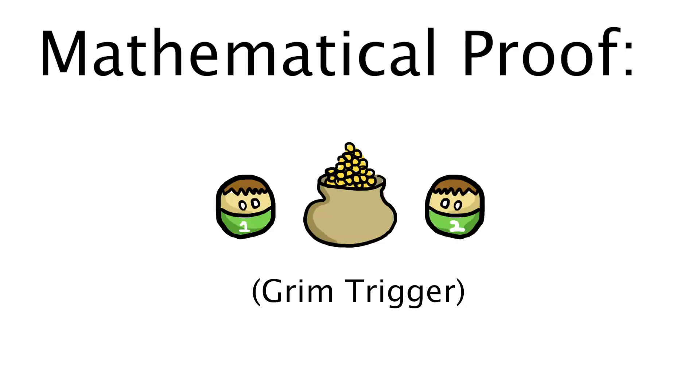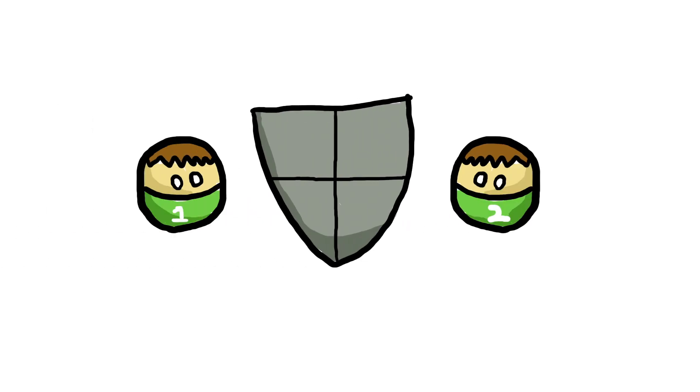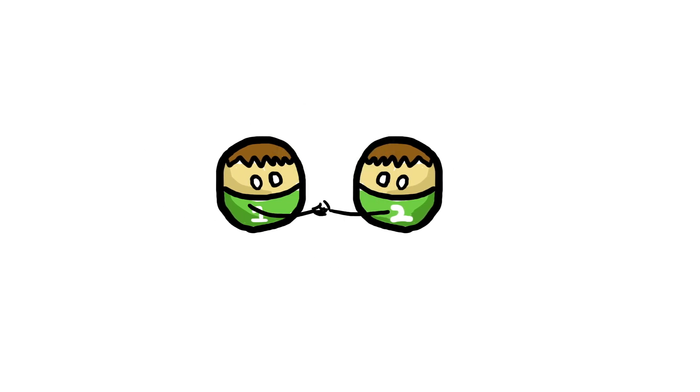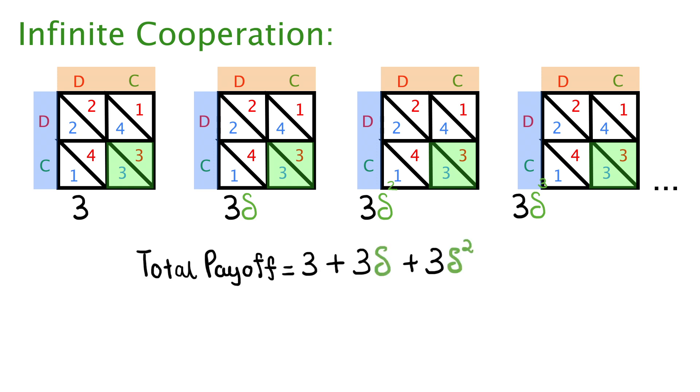We first have to assume that both players follow the exact same strategy. Remember, the grim trigger strategy is purely defensive, so players will always cooperate until someone betrays each other. So if player 2 decides to cooperate forever, he will get a payoff of 3 each game, discounted by delta. So his total payoff would be 3 plus 3 delta and so on, and since we already have a formula for infinite payoff, this gives us 3 divided by 1 minus delta.